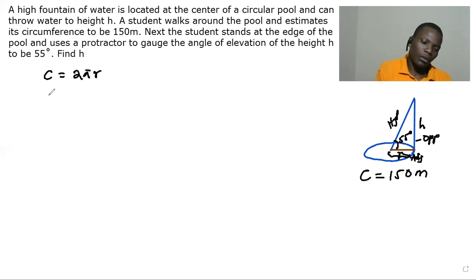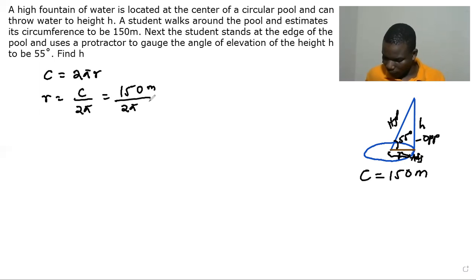So radius is circumference over 2π, and circumference is 150 meters divided by 2π. Pi is a constant. 150 divided by 2π, we get 23.8. So we round off to 23.9 meters. This is our radius.